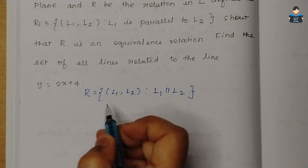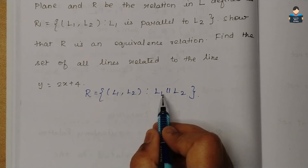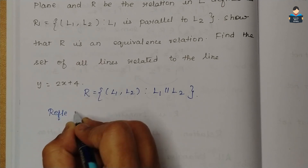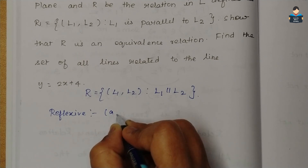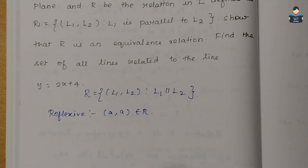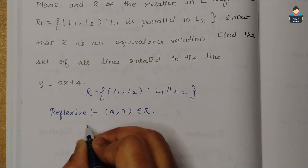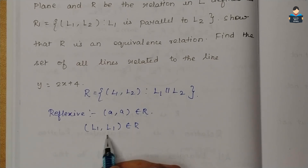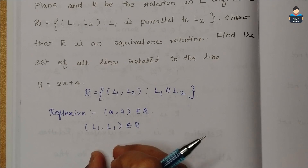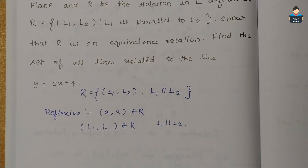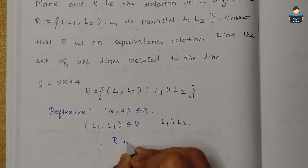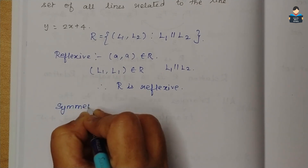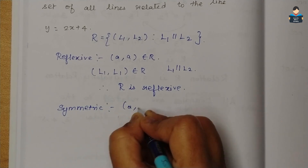First, let's check the reflexive condition. For reflexive, (a, a) must belong to R. So we check: does (L1, L1) belong to R? It is obvious that L1 and L1 are the same line, so L1 is parallel to L1. Therefore, R is reflexive.